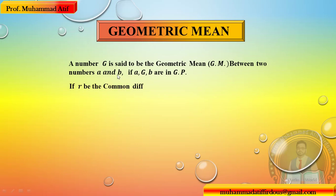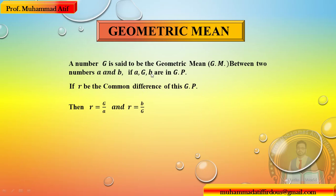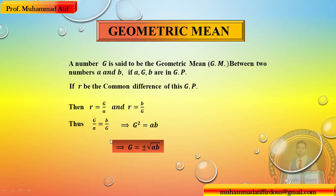اگر یہ geometric progression میں ہیں تو common ratio R کس کے equal ہوگا؟ Second term کو first term سے divide کریں یا third term کو second term سے divide کریں — دونوں same ہیں۔ Cross multiply کریں تو G² = AB، اور G = √(AB) آ جائے گا۔